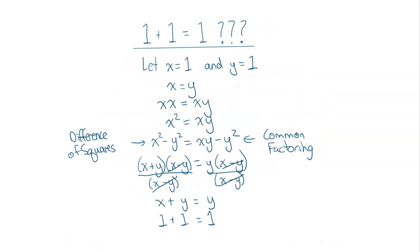Here's the proof I went over in my last video. I said that x equals 1 and y equals 1 — that's totally allowed — so then x is equal to y. Whatever you do to one side you have to do to the other, so if you multiply one side by x, you do the other side by x. It just becomes x squared on the left side. Then we went ahead and subtracted y squared from both sides, which is also allowed.